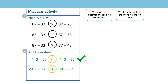Let's look at the one underneath. The next question says 20.3 subtract 0.7 is less than 20.3 subtract 1. This is incorrect — both calculations have the same minuend, 20.3, but 0.7 is less than 1. And the less we subtract, the more we're left with. So this should be 20.3 subtract 0.7 is greater than 20.3 subtract 1. So this is actually the mistake.